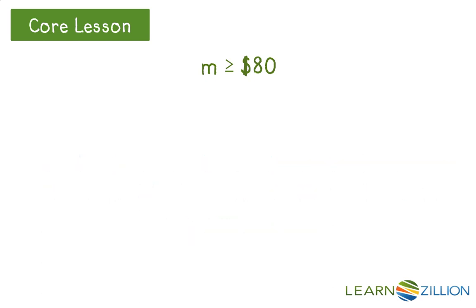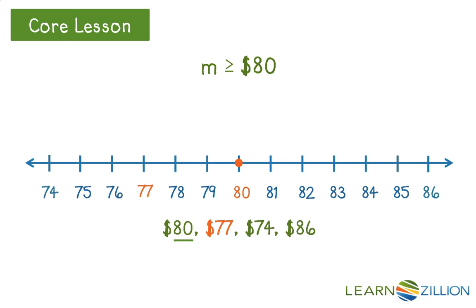Now I will look at my possible solution of $77. Is $77 greater than or equal to $80? As you see, the dot appears to the left on my number line, so this makes it a lesser value — so this cannot be a possible solution.